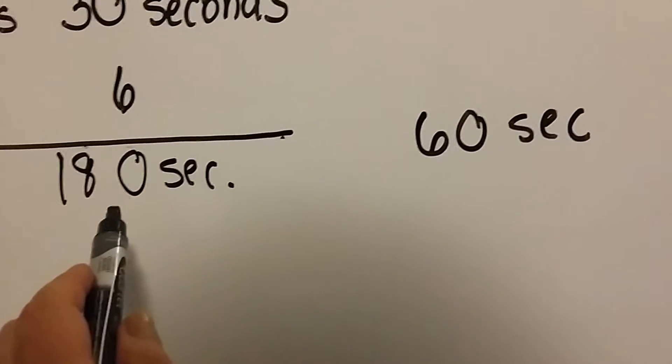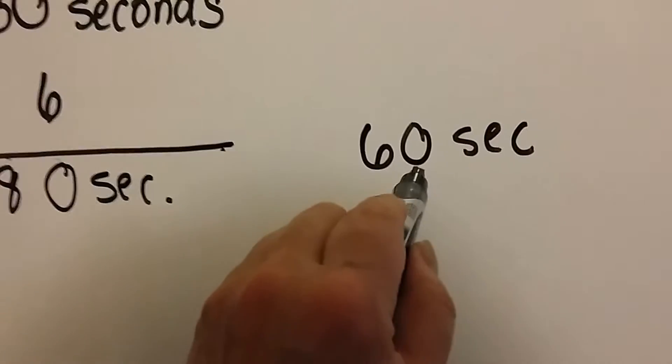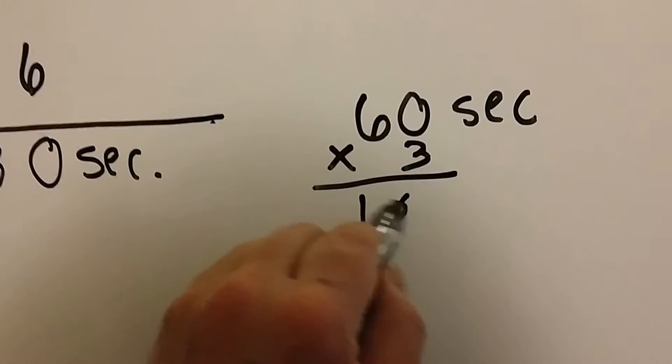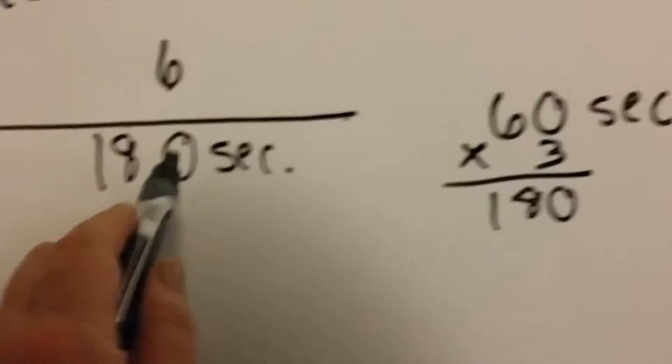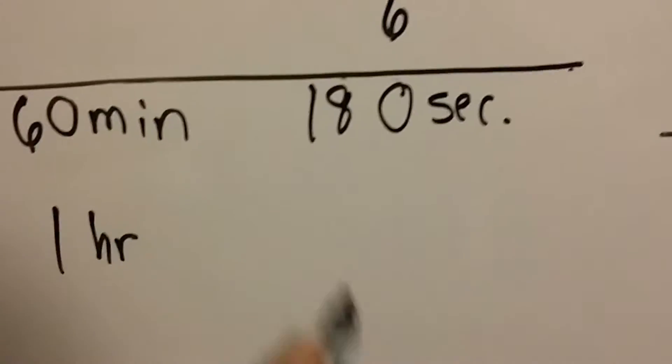So how many 60s are in 180? Three of them, right? Because 60 times 3 is 180. So we know there's three minutes in this 180 seconds.